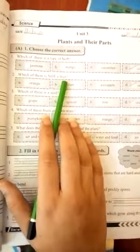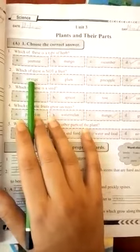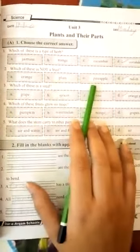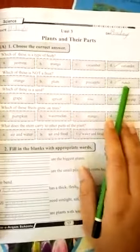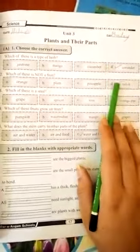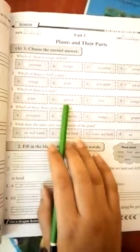Number two, which of these is not a fruit? A. orange, B. plum, C. pineapple, D. radish. So first three are fruits and radish is a vegetable, so D is the answer. Number three, which of these is a seed? Grape, apricot, rose, orange pip. So orange pip is the answer. Pip is another word for seed, so orange seed.